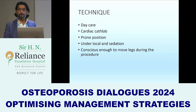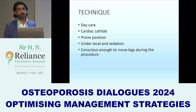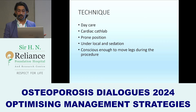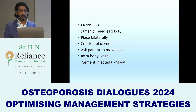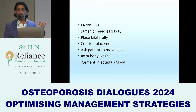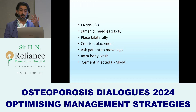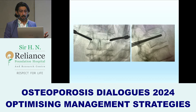I typically do it as a day-care procedure. I prefer a cardiac cath lab because the vision is much better. It's done in the prone position under local anesthesia; for patients who are a little uncomfortable I ask my anesthetist to give some sedation, however we keep them conscious enough so they can move their legs during the procedure, which serves as real-life neuromonitoring — confirming that the needle is in place and that the cement has not leaked into the spinal cord or nerves. We inject local anesthesia as an erector spinae block and use Jamshidi needles, preferring bilateral placement.